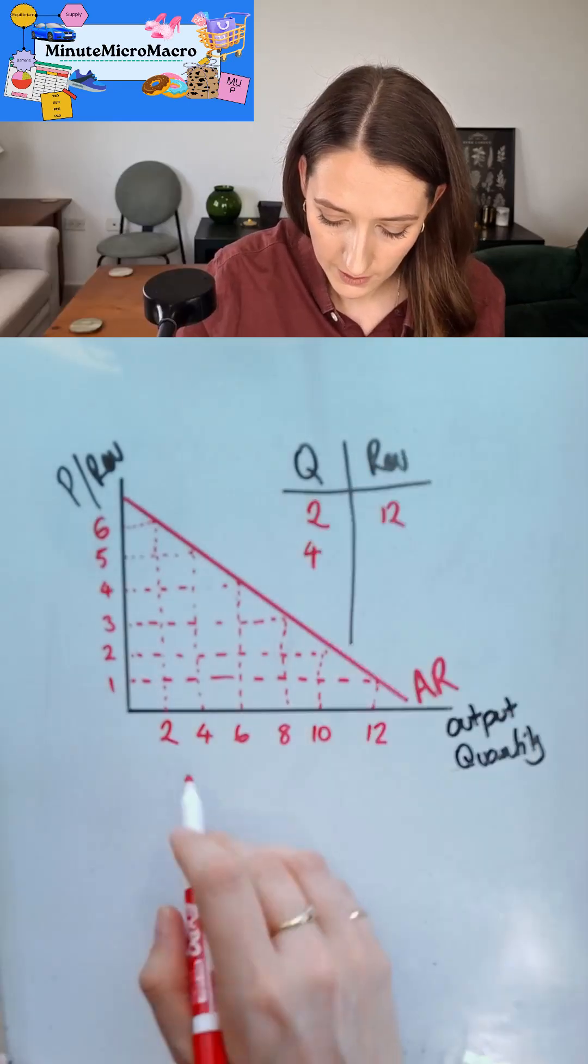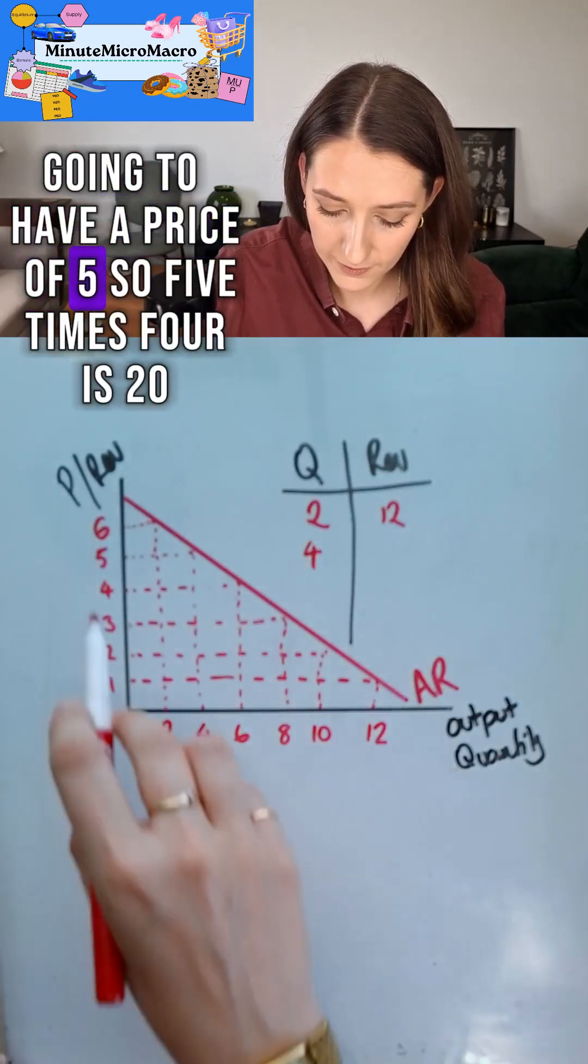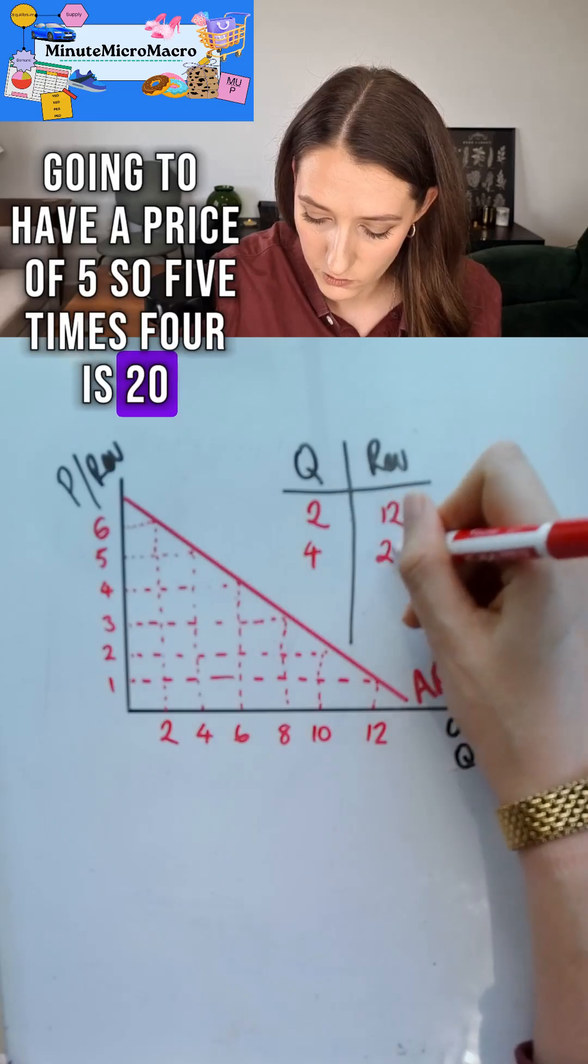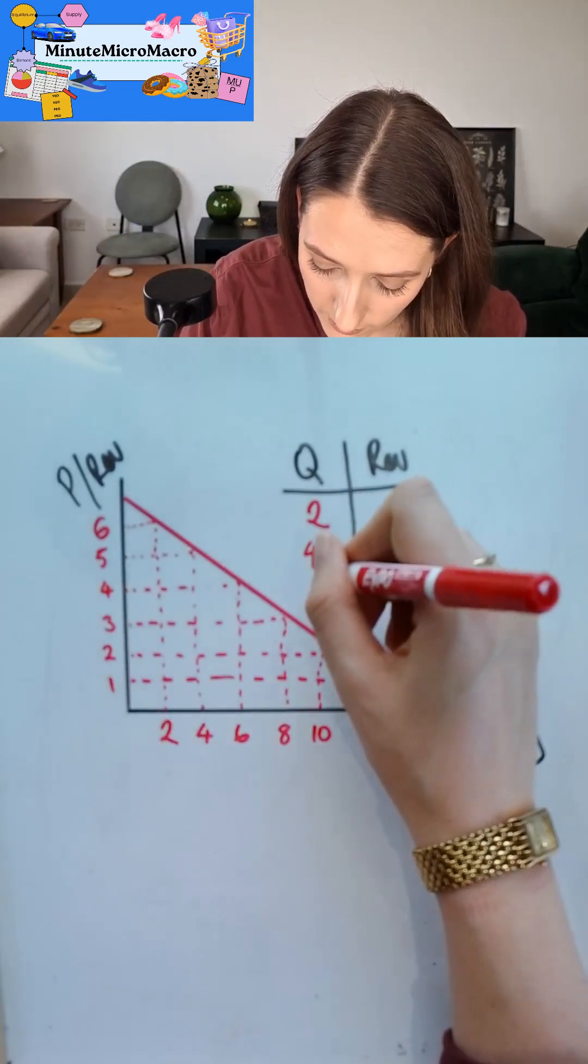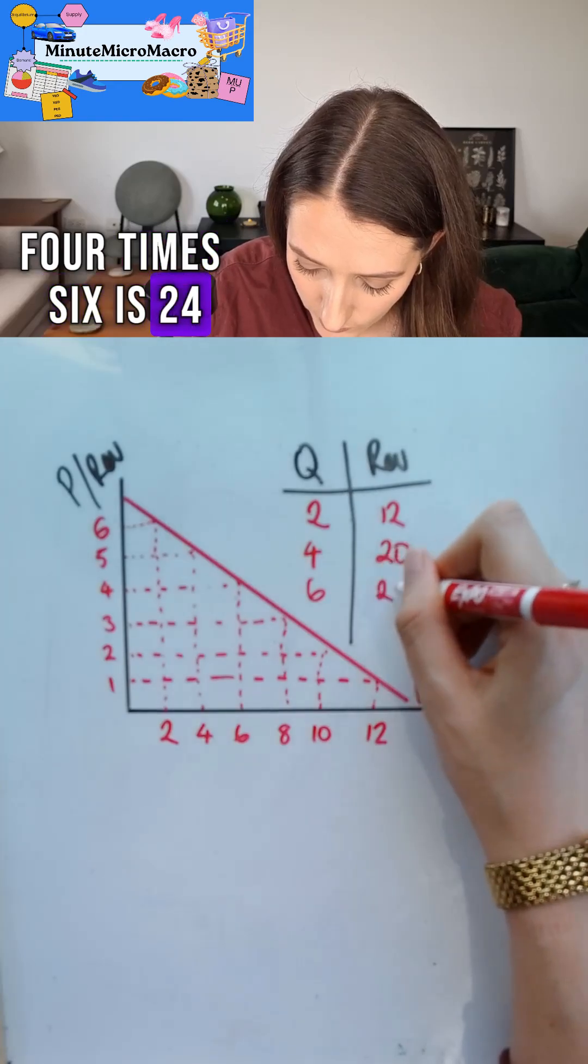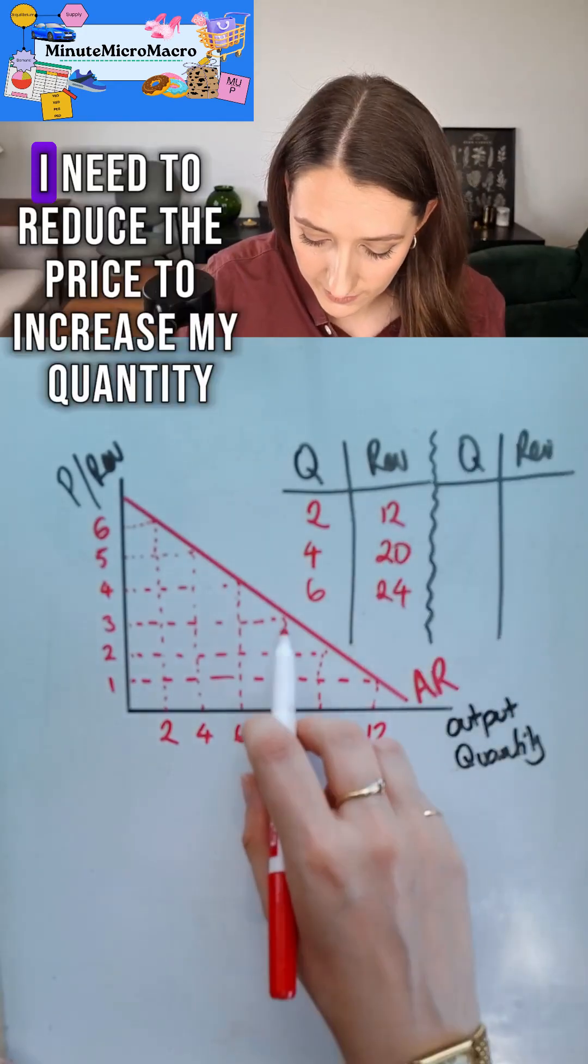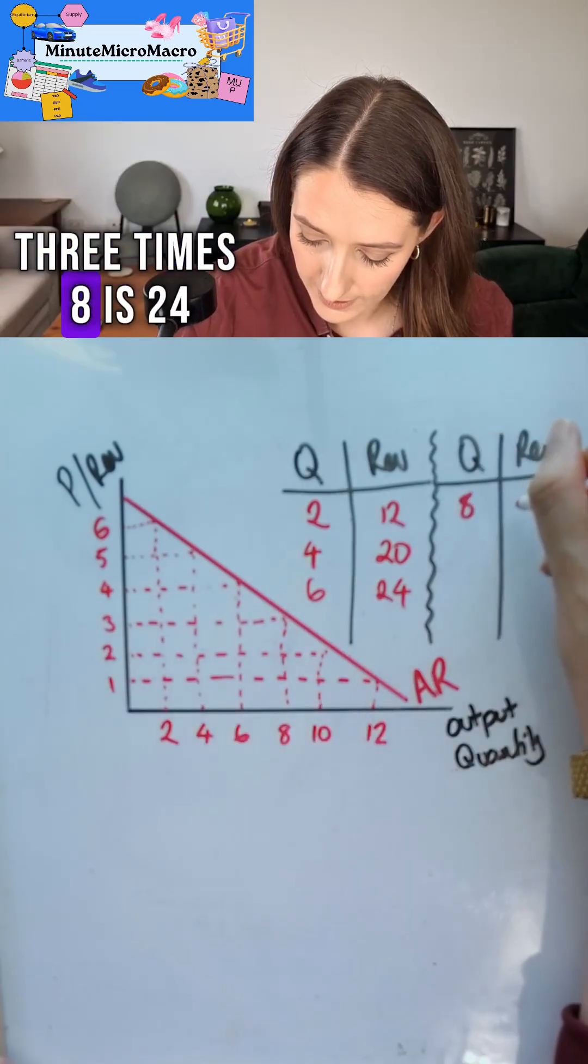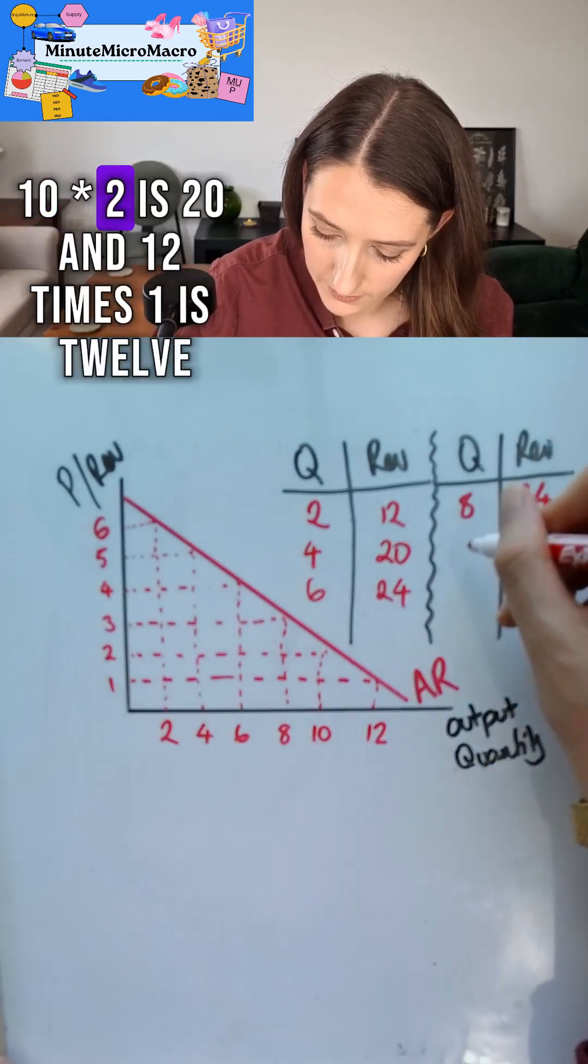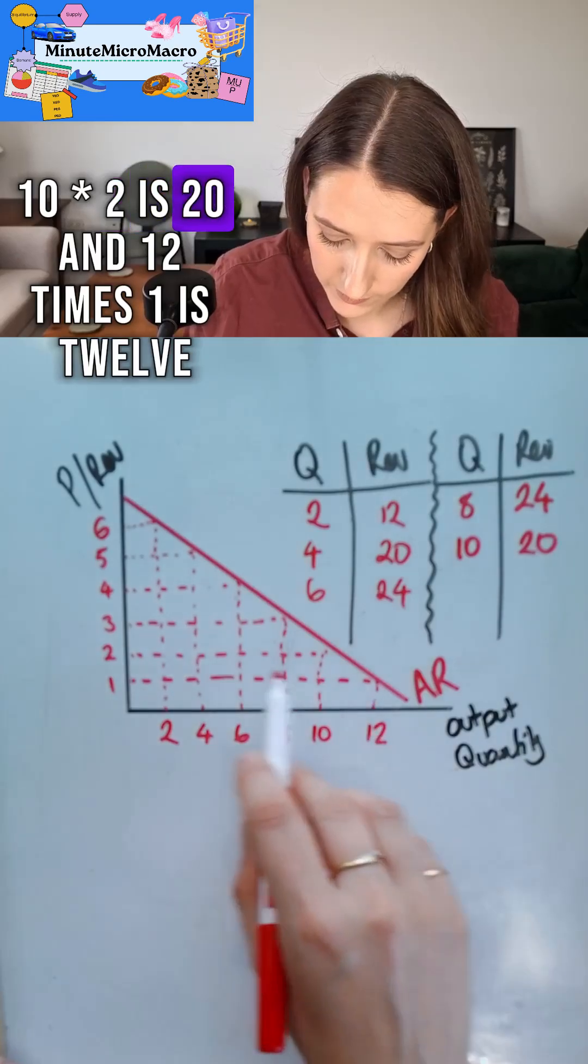If I produce six units I can price them at four. Four times six is twenty-four. If I produce eight units I need to reduce the price to increase my quantity. Three times eight is twenty-four. Ten times two is twenty and twelve times one is twelve.